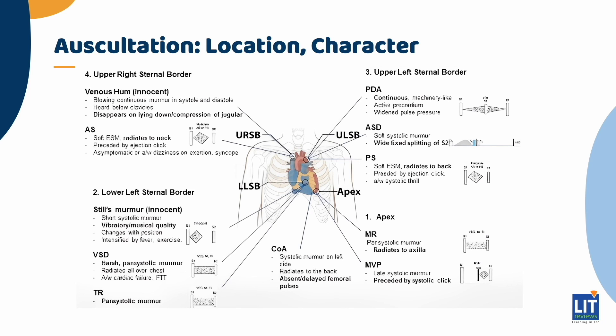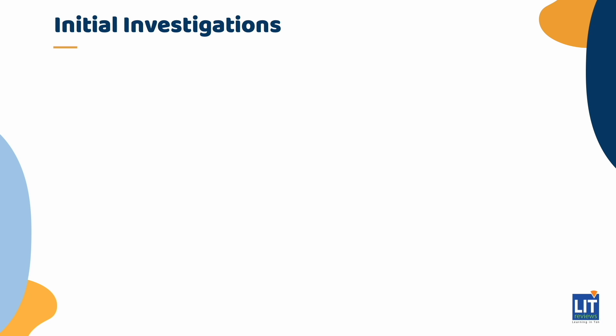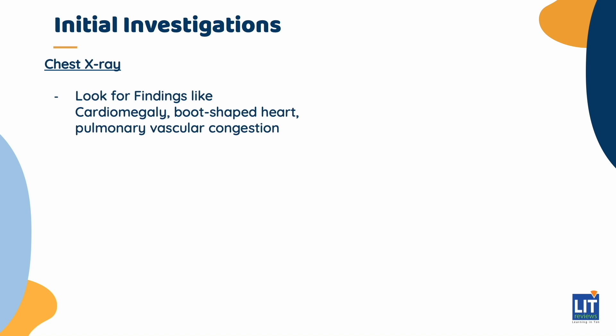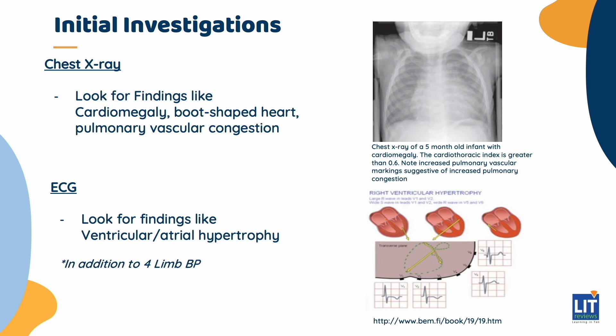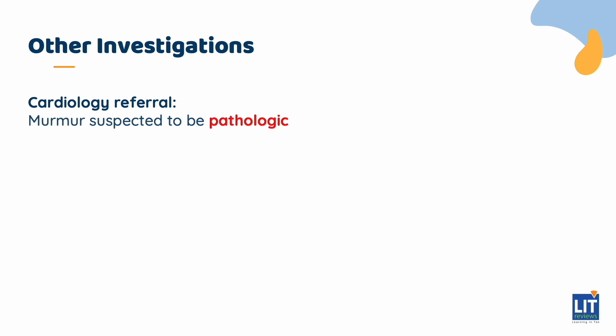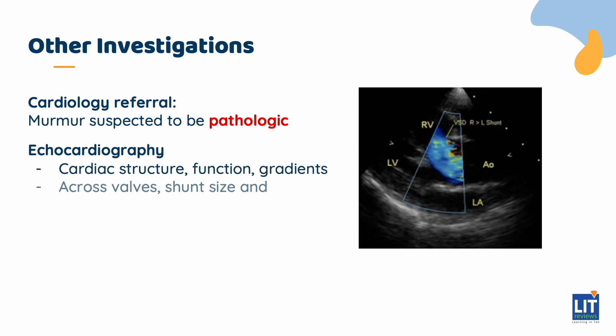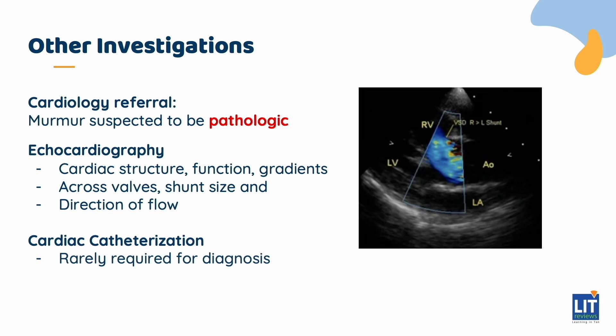This slide shows some common paediatric murmurs, where they are best heard, and their classic characteristics. If the history and physical exam findings are suspicious for a pathological murmur, initial investigations to order include chest X-ray and ECG, in addition to a 4-limb blood pressure. In the case of a murmur suspected to be pathologic, a cardiology referral is appropriate. Further investigations include 2D echocardiography and cardiac catheterization if necessary.